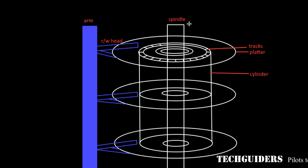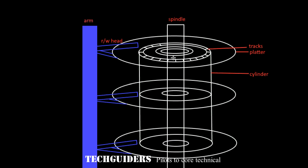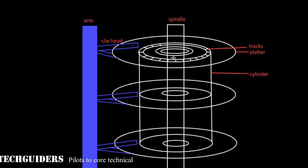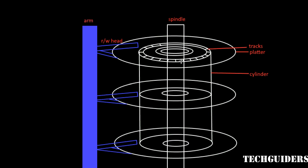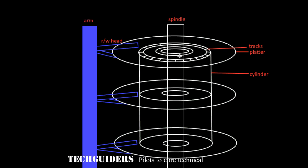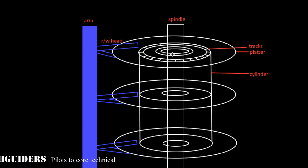The length of the outer tracks is greater than that of the inner tracks, but the number of sectors in each track is kept the same. The bit density is kept lower in outer tracks than in the inner tracks — in other words, the bits are more densely arranged in the inner tracks than the outer tracks.